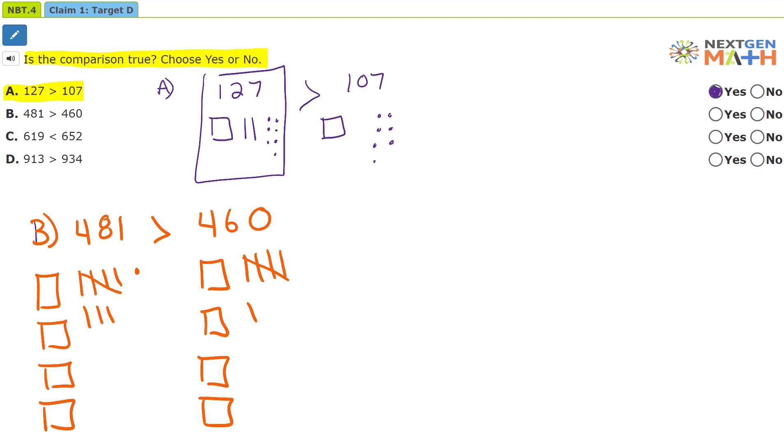Because there are more tens in 481 than 460, 481 is bigger. So this is correct. This is a yes. 481 is bigger than 460. So that's a yes.